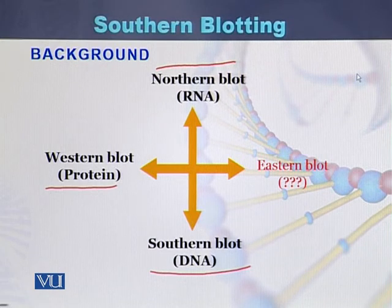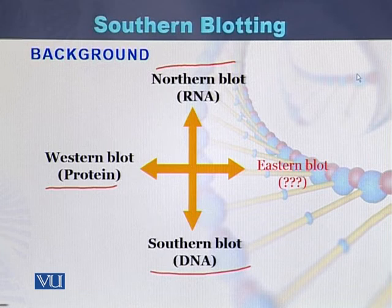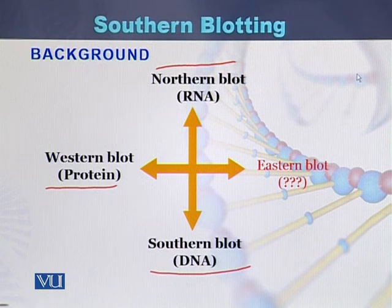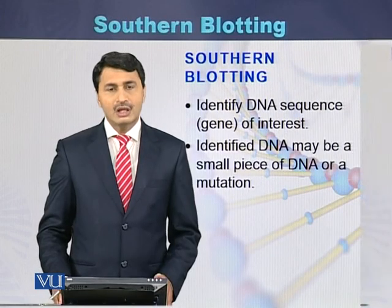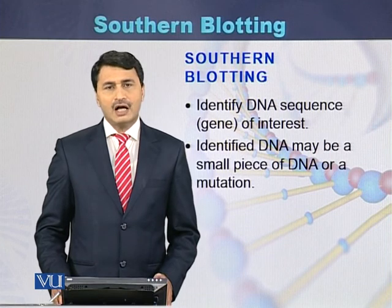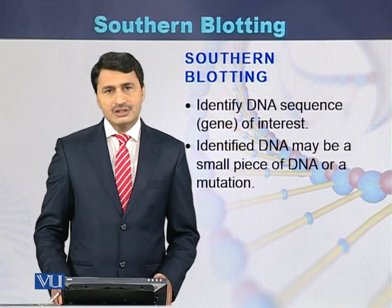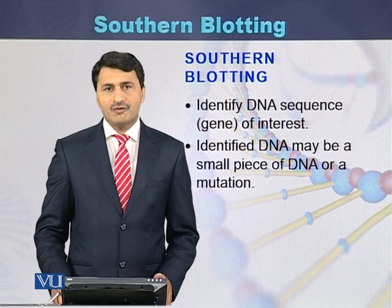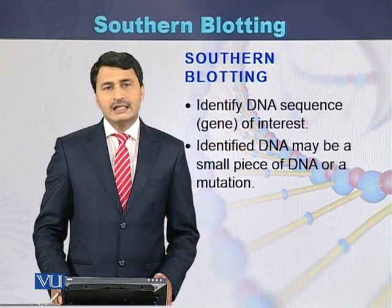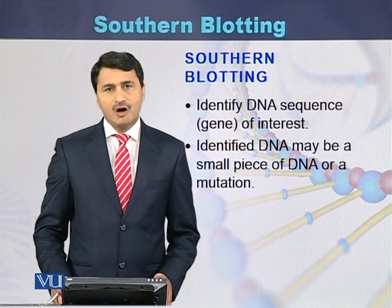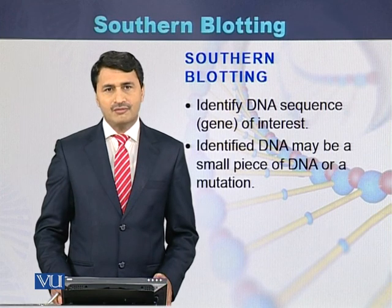Based on the name of its inventor, Southern, these techniques have been named: Southern blot is for DNA, Western blot is for proteins, and Northern blot is for RNA. Southern blot is a molecular biology technique used to identify a particular sequence or a sequence of a gene, and it can also be used for identification of particular polymorphisms or a particular mutation from the sequence of DNA.